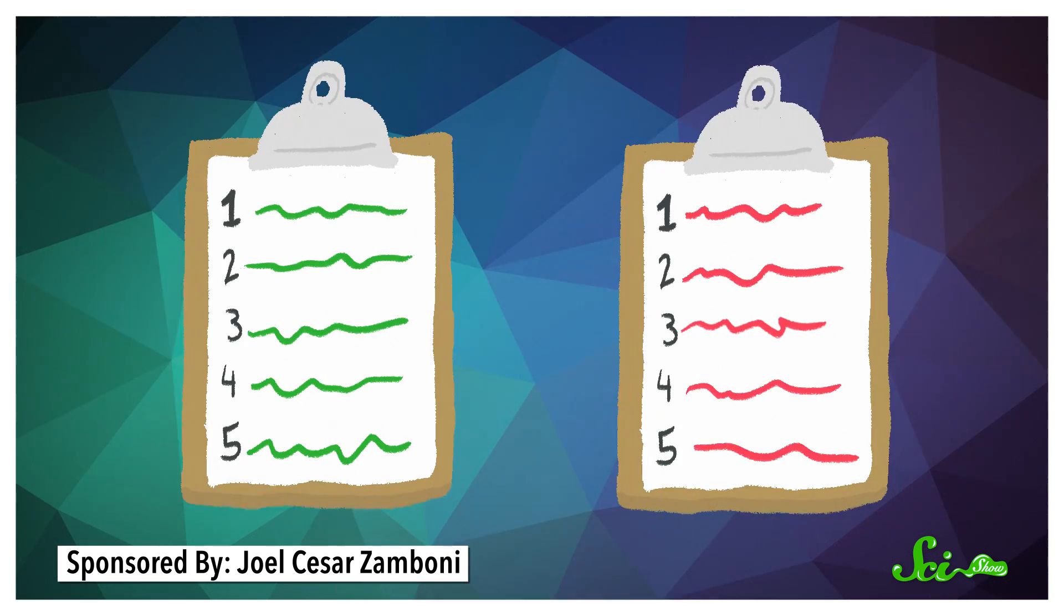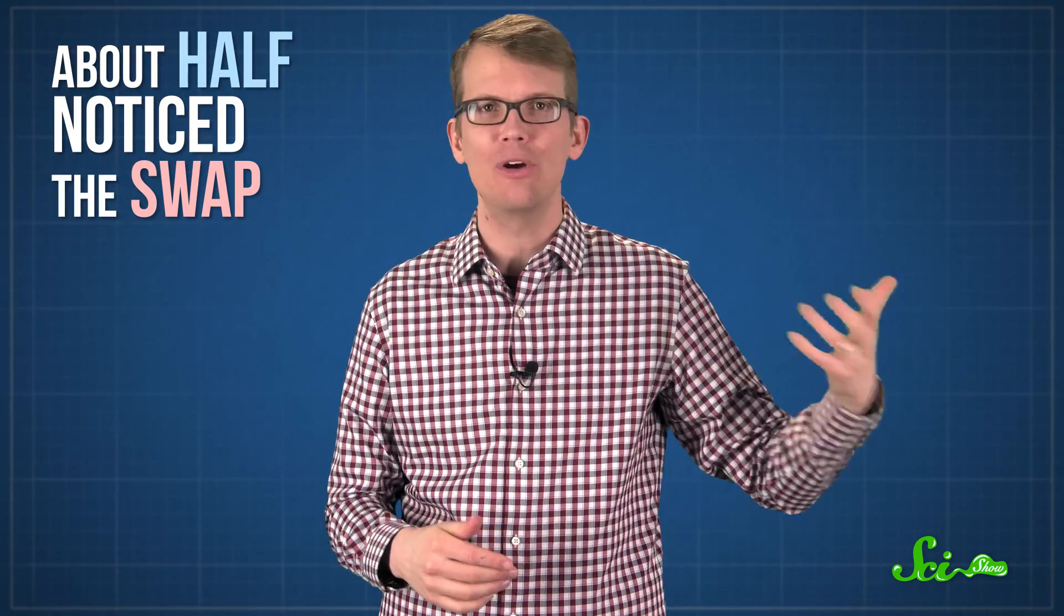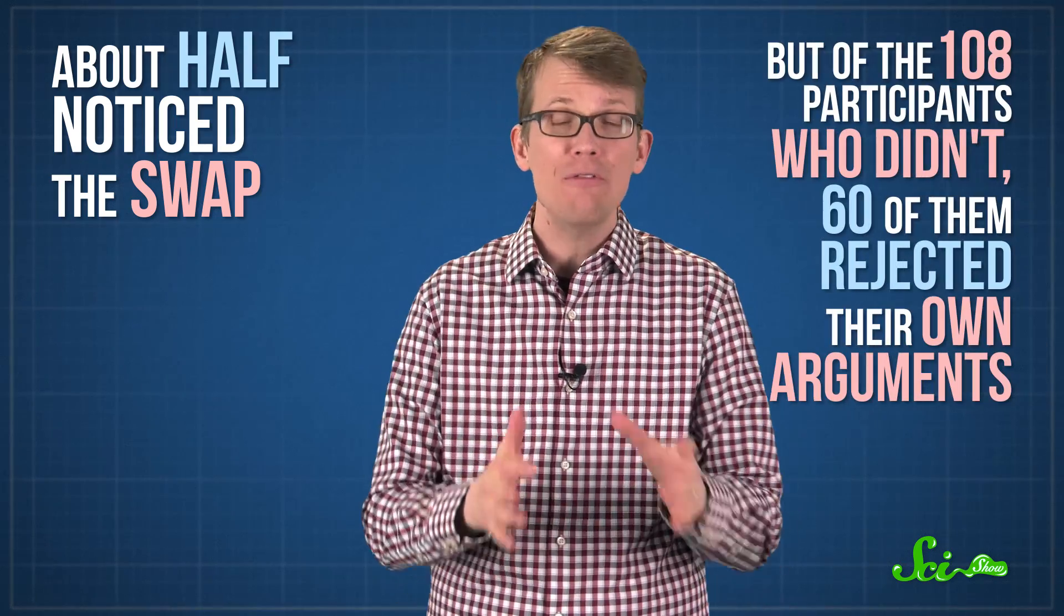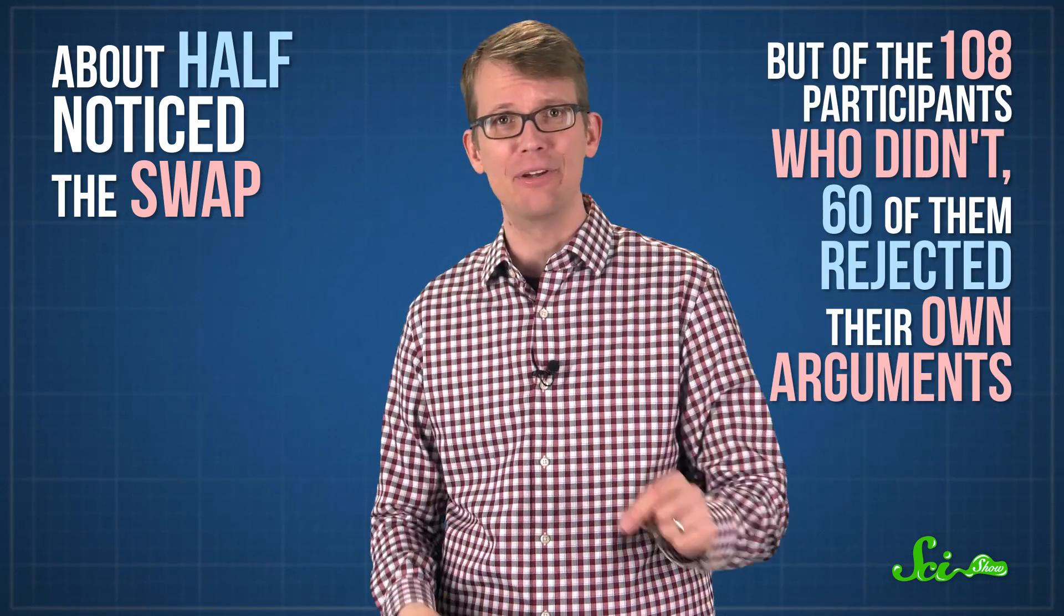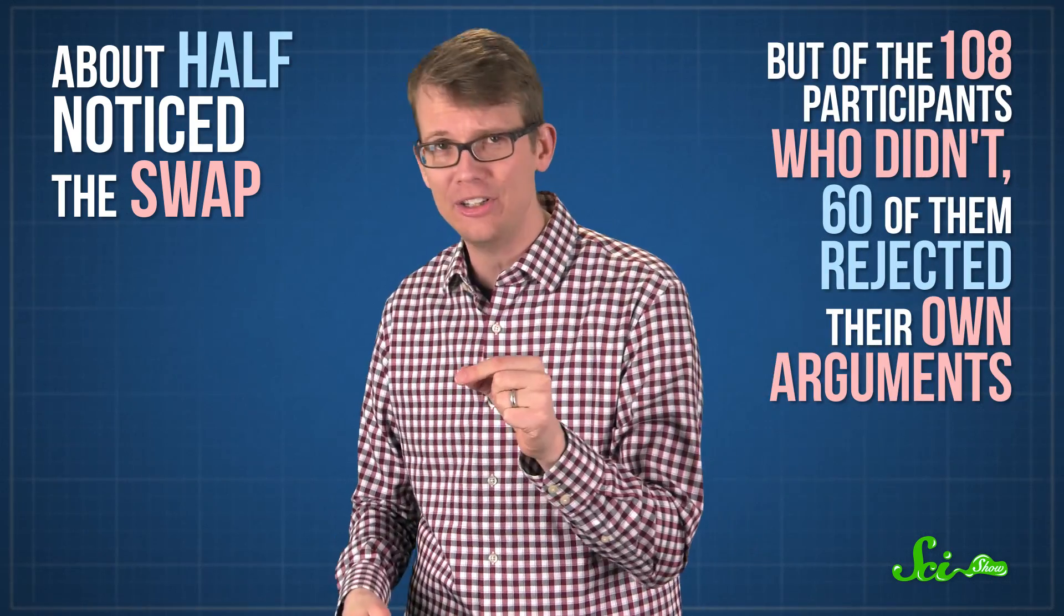But secretly, for one of the five problems, the researchers swapped the participants' own argument for the strangers. The researchers hoped people wouldn't recognize their own argument, and would judge it like a stranger's. About half noticed the swap, that they were being asked to evaluate their own argument. But of the 108 participants who didn't, 60 of them rejected their own arguments.